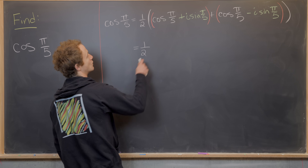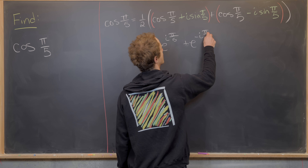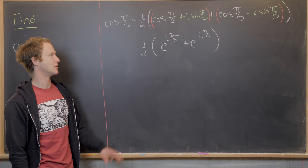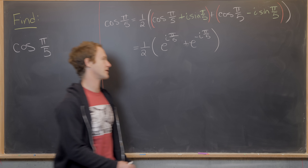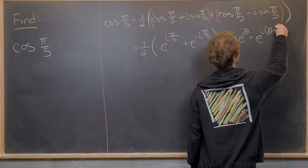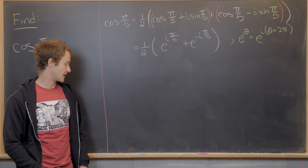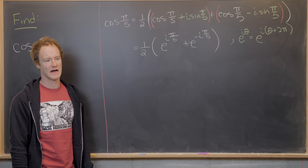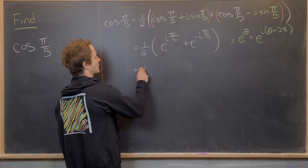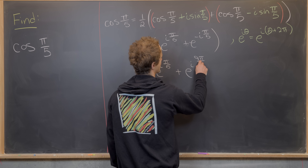We now have ½(e^(iπ/5) + e^(-iπ/5)). It's useful to write this with a positive exponent. Since sine and cosine are 2π periodic, e^(iθ) = e^(i(θ+2π)). So we add 2π to -π/5: that's 10π/5 - π/5 = 9π/5. We can rewrite this as ½(e^(iπ/5) + e^(i9π/5)).